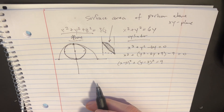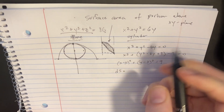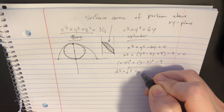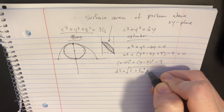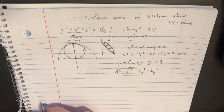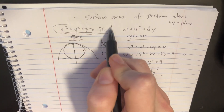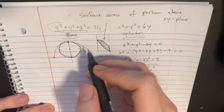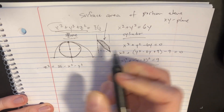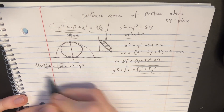We need to remember what the formula for the surface area is. That's just going to be ds equals the square root of 1 plus fx squared plus fy squared. We're going to figure out what fx and fy are by referring back to this equation. We'll rewrite it as z squared equals 36 minus x squared minus y squared, then take the square root of everything on that side. That way we get z as a function of x and y.